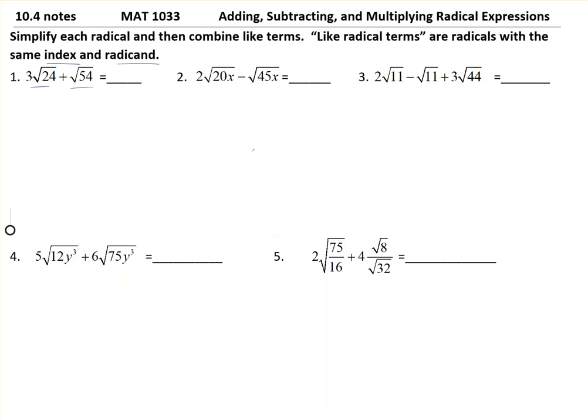However, we need to look at can we simplify them and then possibly do they match. We're looking at can we pull out any perfect squares. We're going to start with 3√24. We want to break it down into factors like we were doing in 10.3. We're going to do 4 times 6 because 4 is a perfect square.